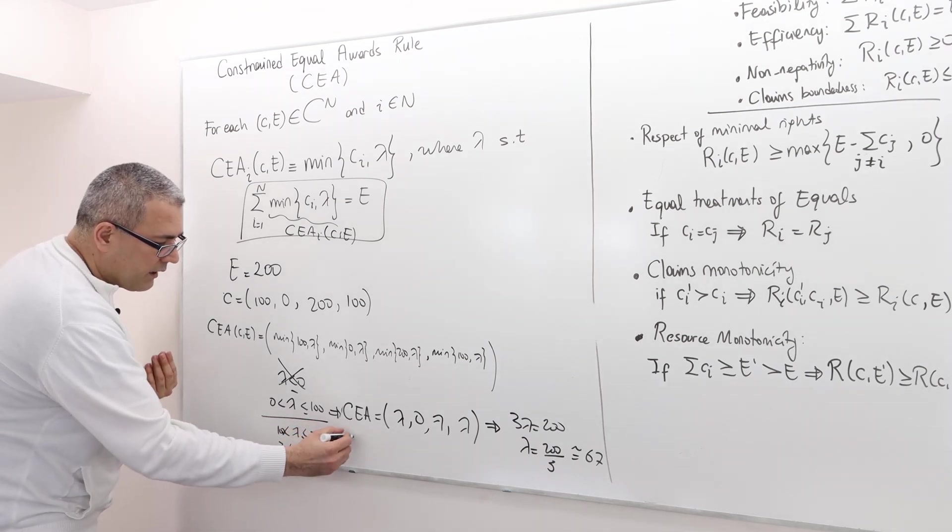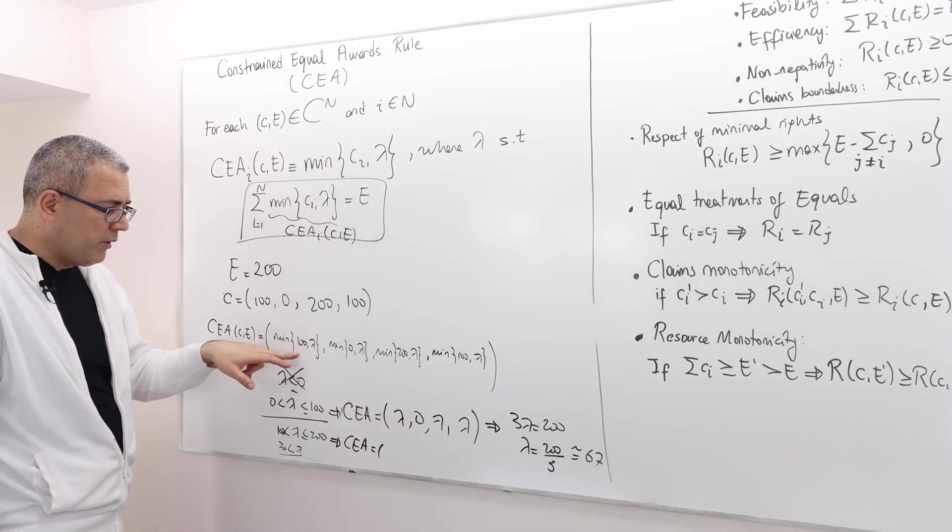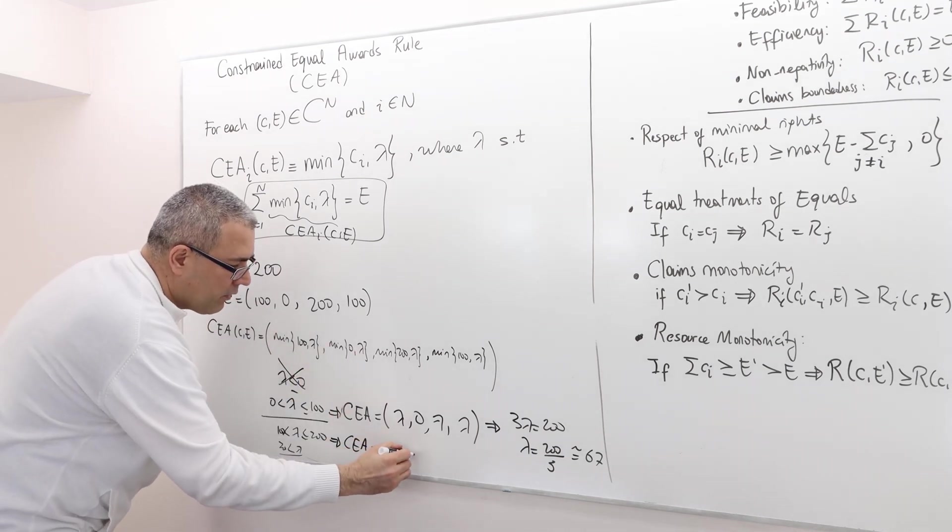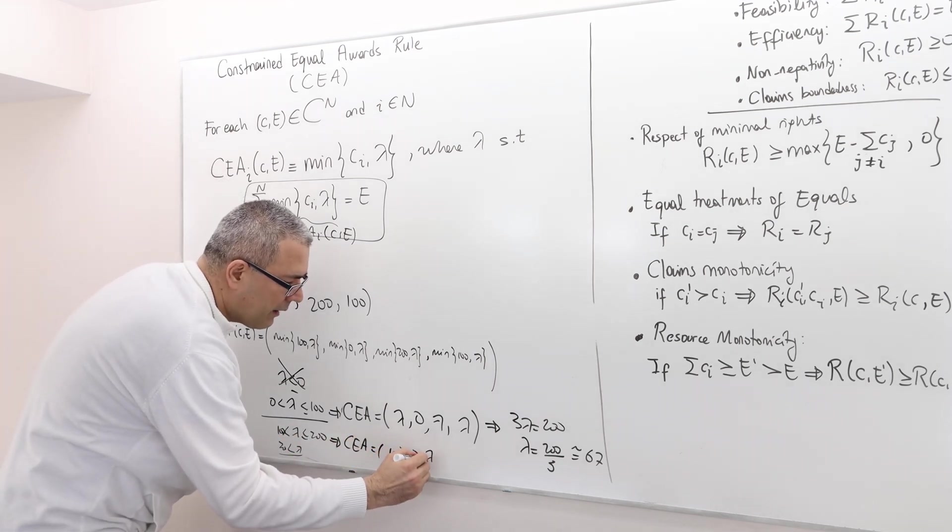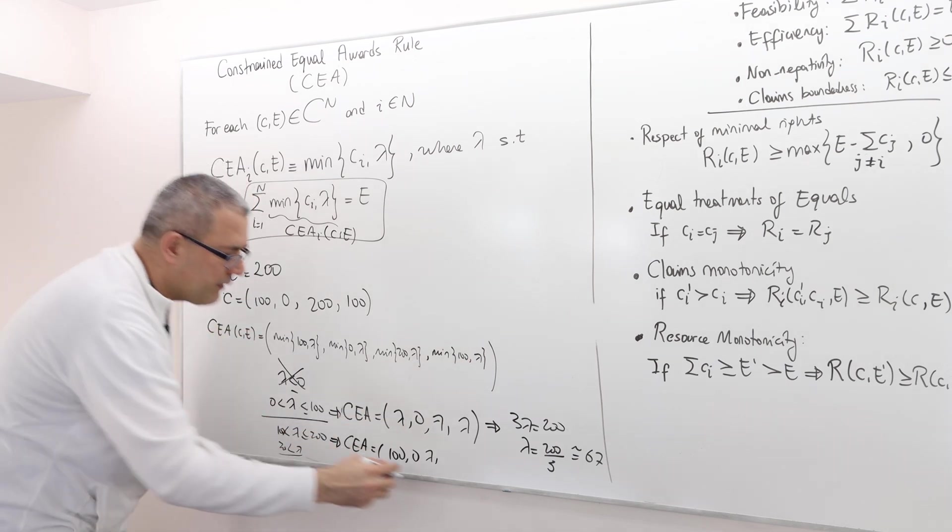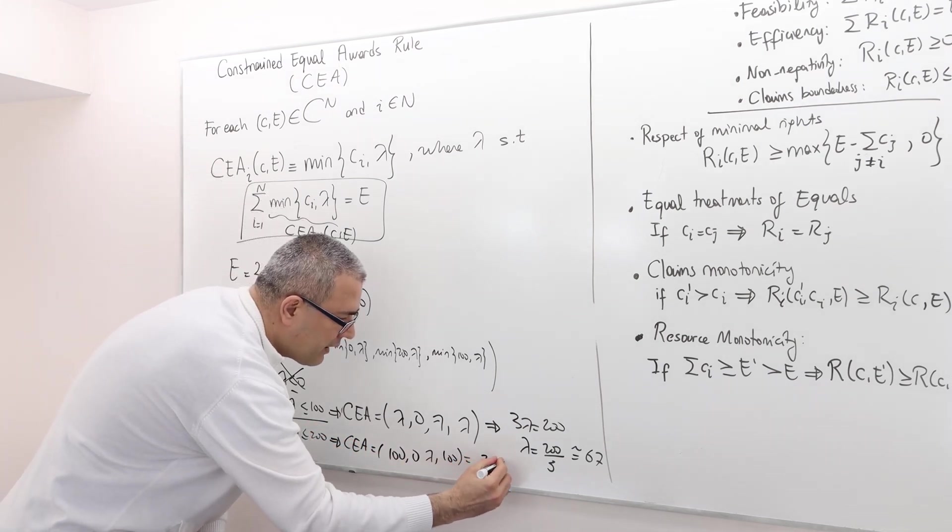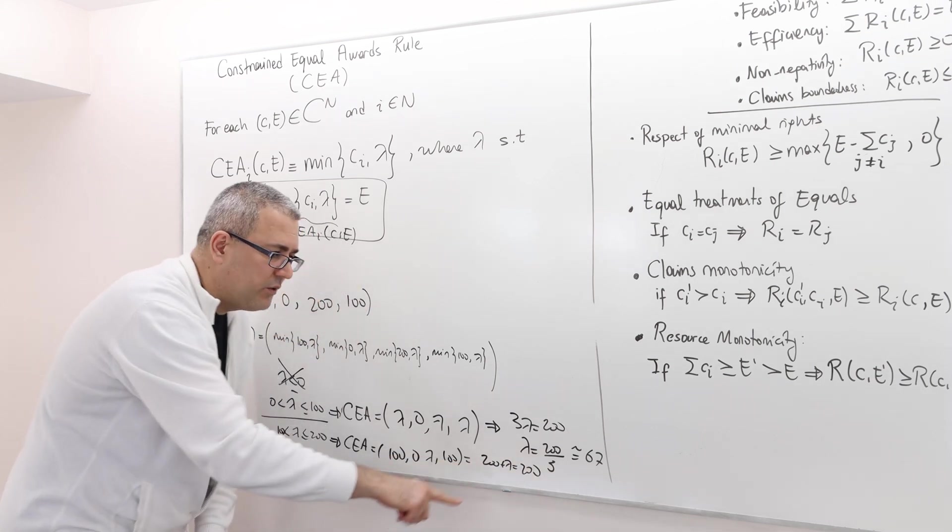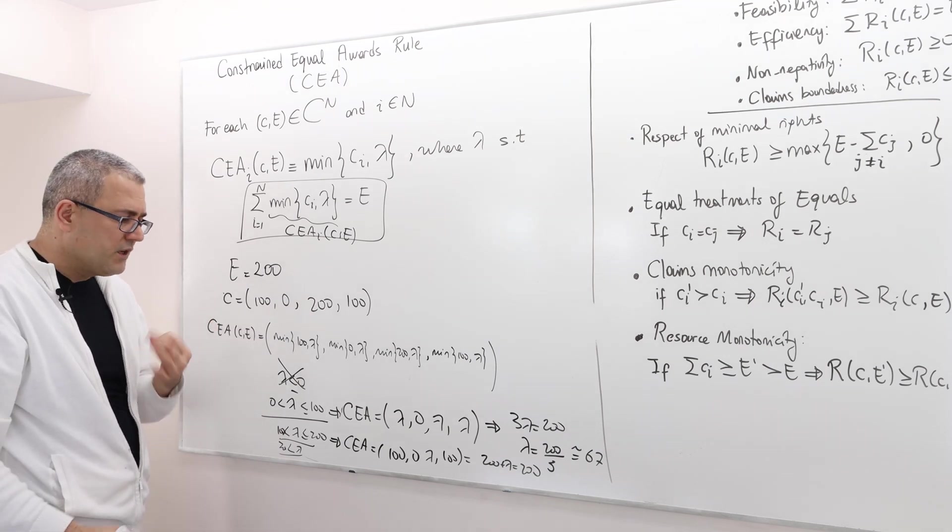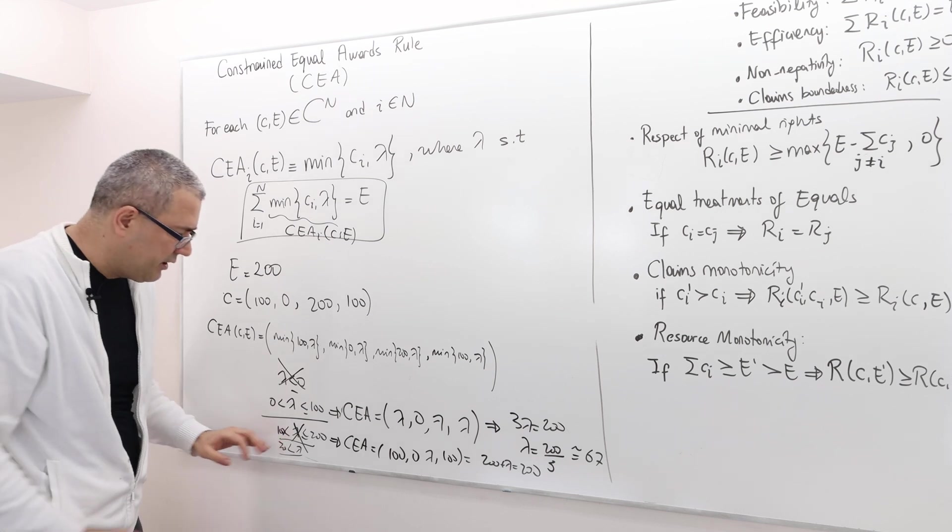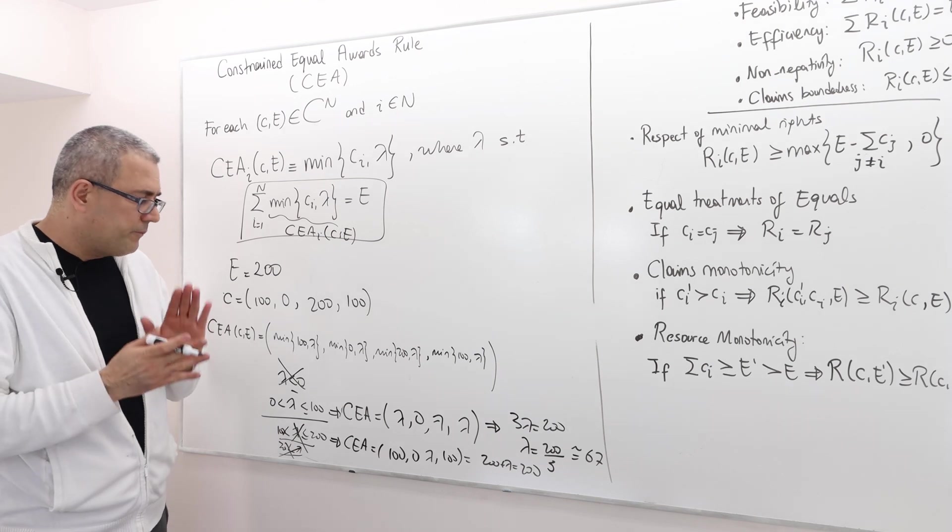If this is the case, then CEA is going to be: lambda is something bigger than 100, so the minimum of 100 and lambda is going to be 100. The minimum of 0 lambda is going to be 0. Minimum of 200 lambda (remember lambda is less than 200) is going to be lambda. And minimum of 100 lambda is going to be 100. That means when I add these numbers, I'm going to have 200 plus lambda has to equal E, which is 200. So lambda has to be 0. But to begin with, I assumed lambda is a number greater than 100. Therefore, we cannot have lambda in this region.